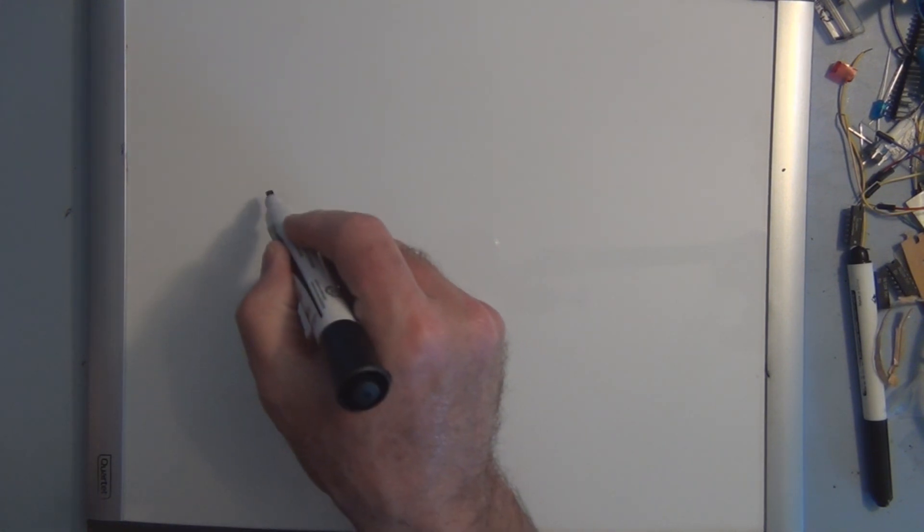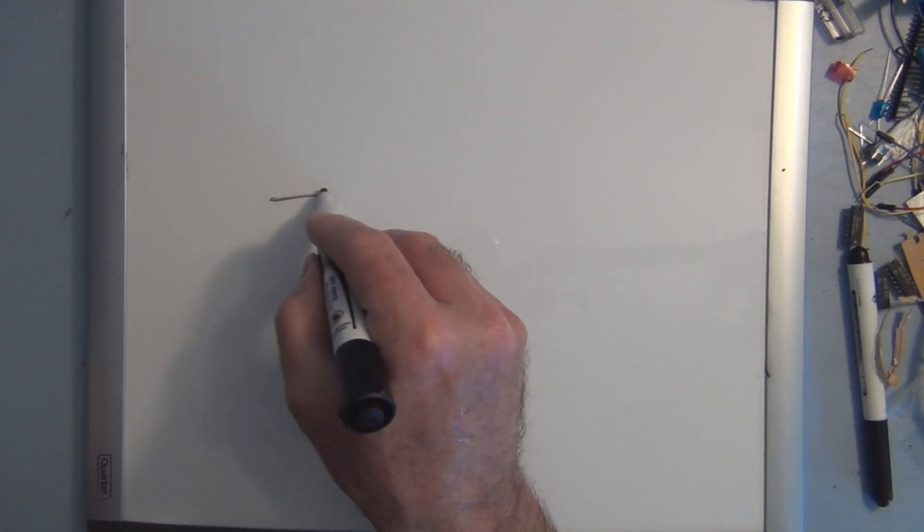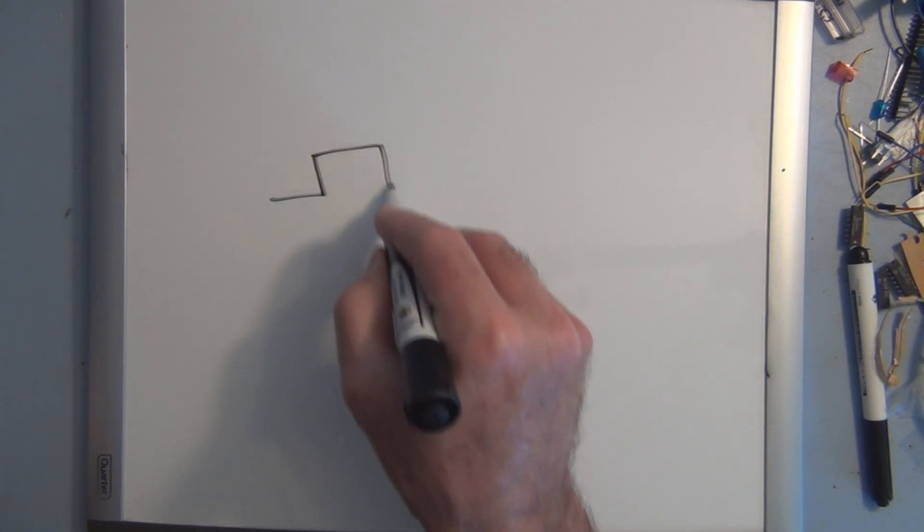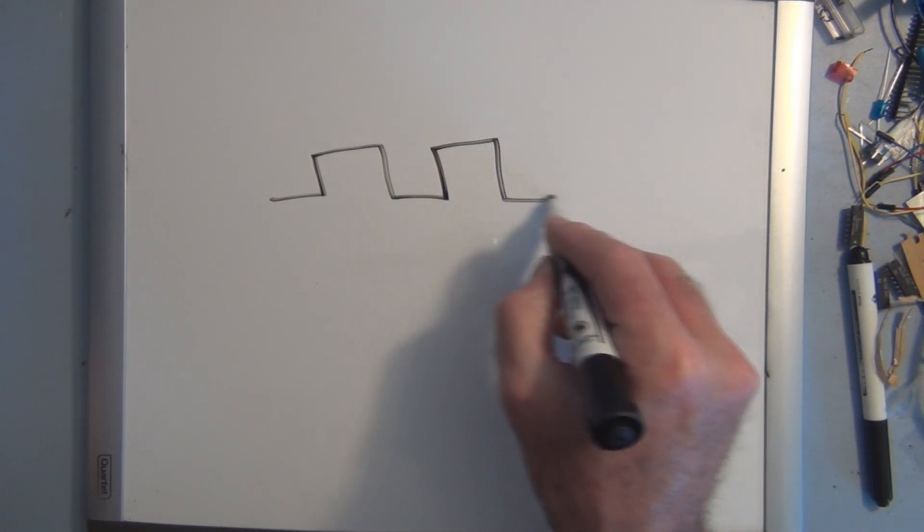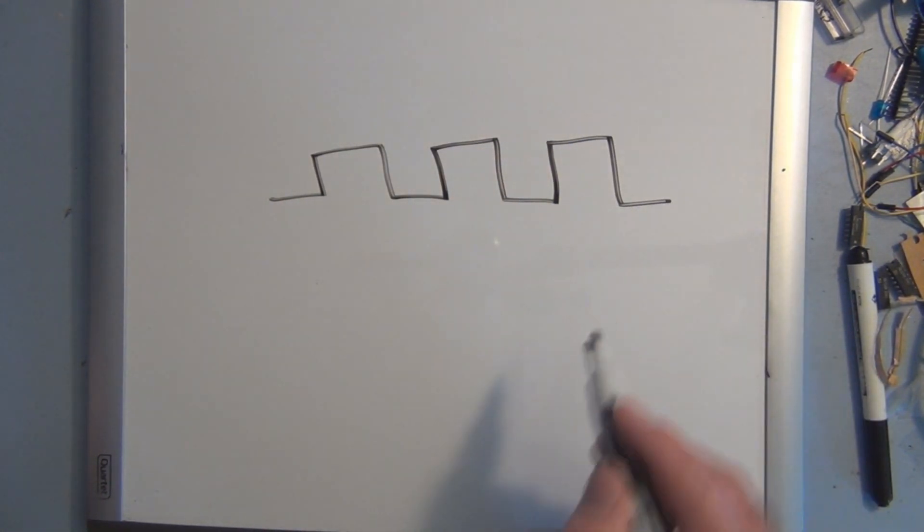Welcome to my channel. In the last video I measured RPM using an interrupt that was triggered by the blades attached to a DC motor shaft. When the blades broke the beam on an opto sensor, it created a square wave and that would trigger the interrupt.